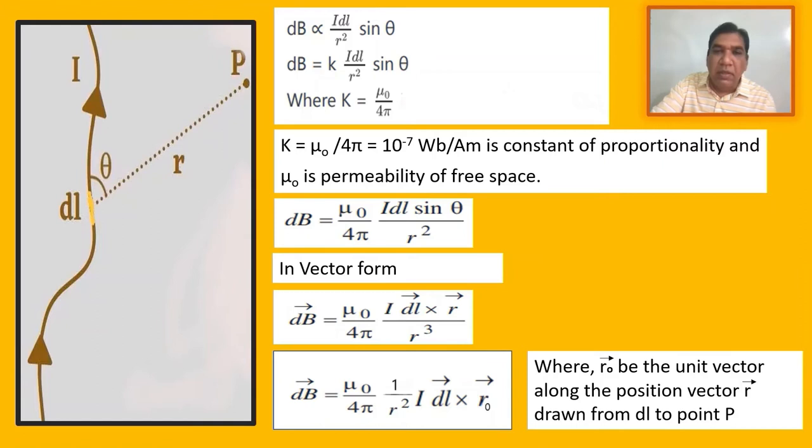From the previous slide, dB is proportional to I dl sin θ over R squared. Taking K as a proportionality constant, we write dB equals K I dl sin θ over R squared, where K equals μ₀ over 4π equals 10⁻⁷ Wb/Am, which is the constant of proportionality, and μ₀ is the permeability of free space.